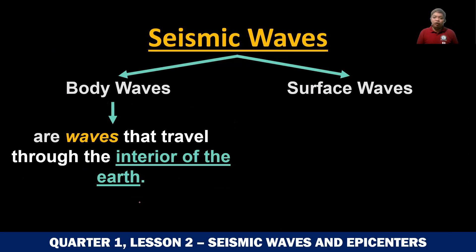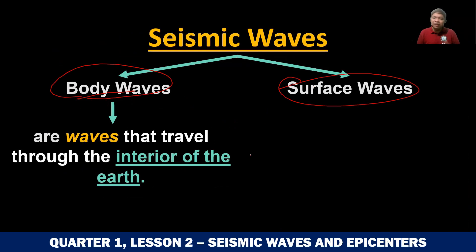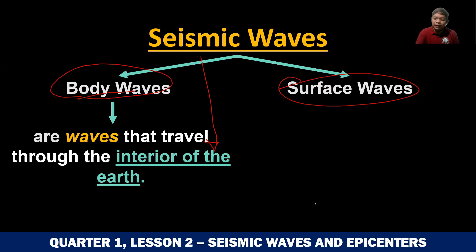Seismic waves have two types. There are two kinds of seismic waves: the body waves — the first one — and the second one, the surface waves. From the term itself, body waves are waves that travel through the interior of the Earth. On the other hand, surface waves are waves that travel on the surface. But let us talk about surface waves later; let us focus first on the body waves.